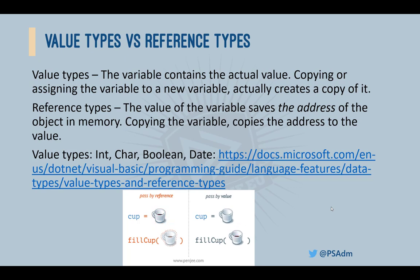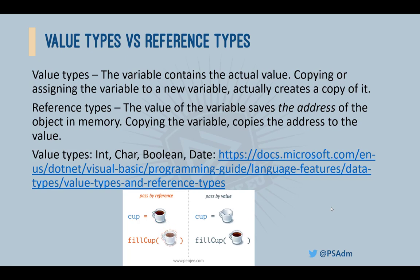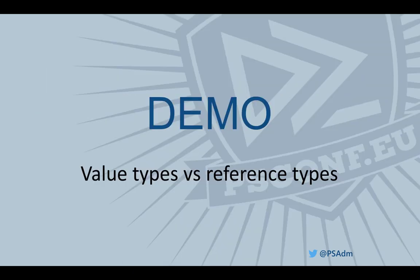You can see in the image that when a value type is passed to a method like 'fill cup', it receives a copy of the cup — filling the cup only affects that instance. When the cup is a reference type, the address of the cup is passed to the method, and filling the cup fills both the cup variable inside and outside of the method. This is a lot easier to understand with some examples, so let's have a look at some demo code.